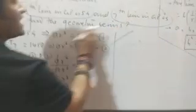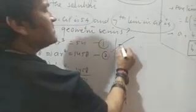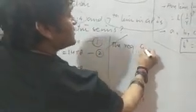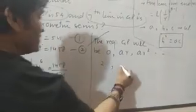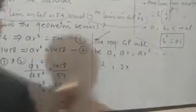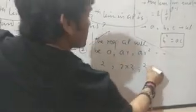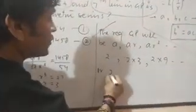A and R you got. What he is asking? Geometric series. The required GP will be A, AR, AR^2, dot dot. What is A? 2. AR: 2 into R is 3, 6. AR^2: 2 into 9. So 2, 6, 18 dot dot is the GP.